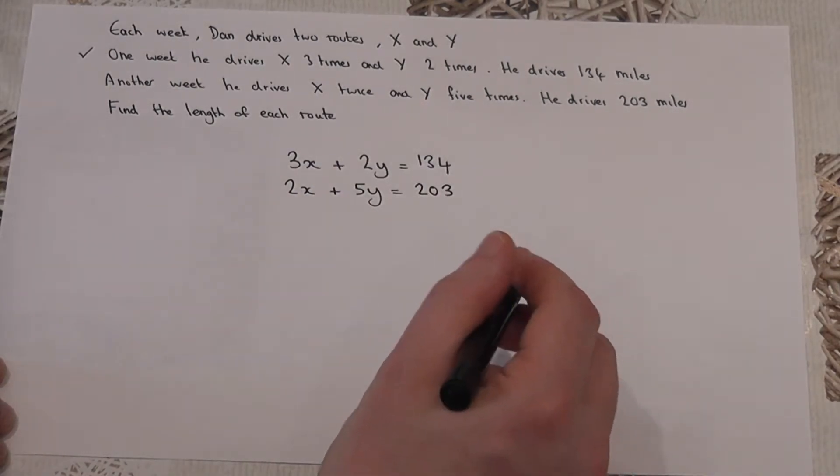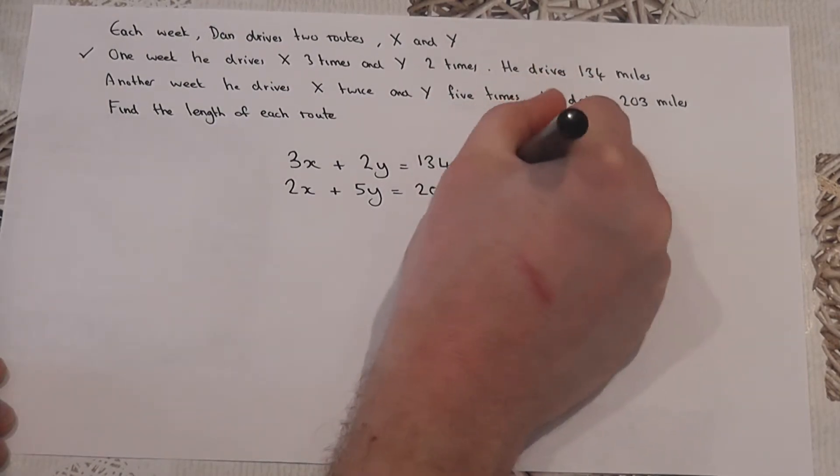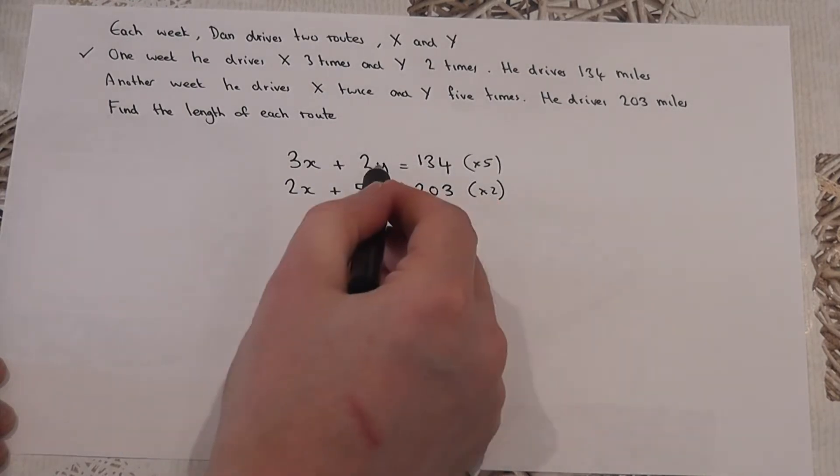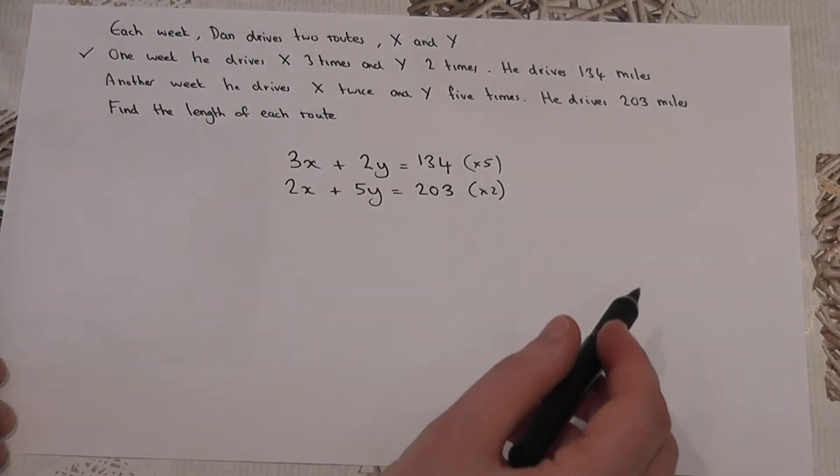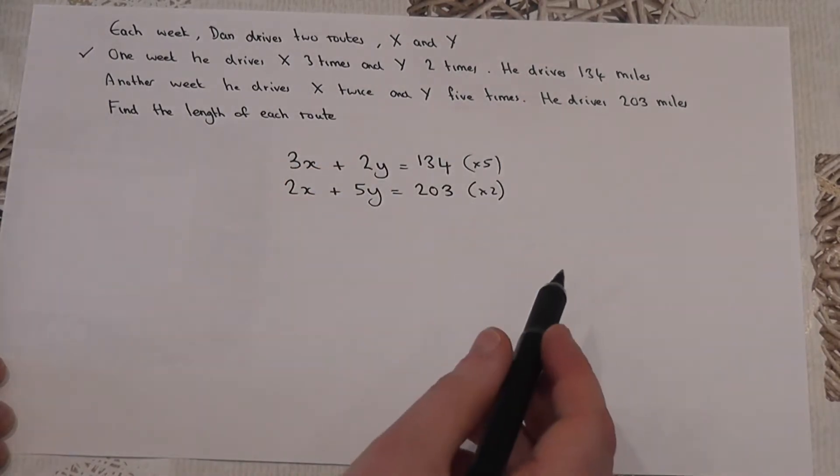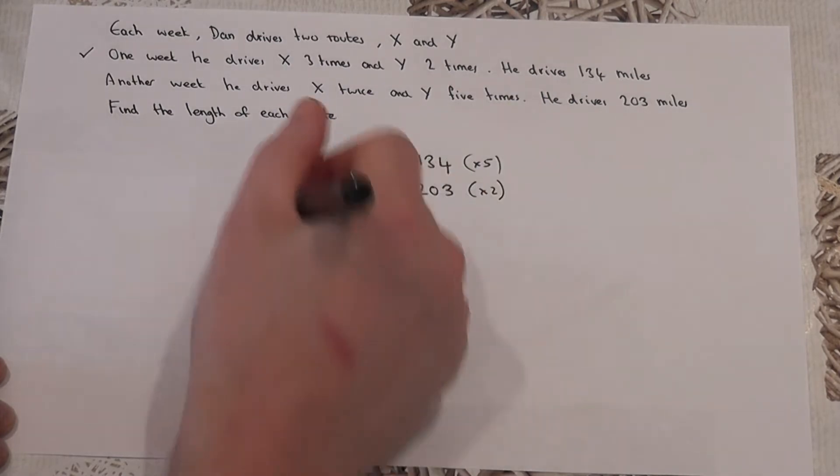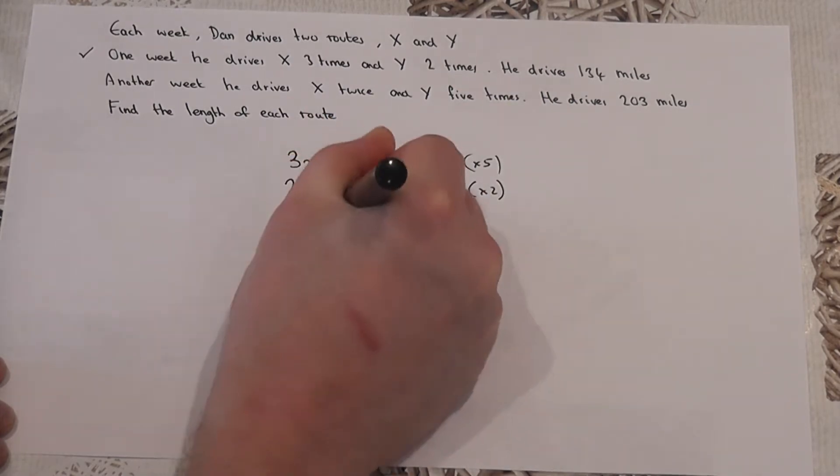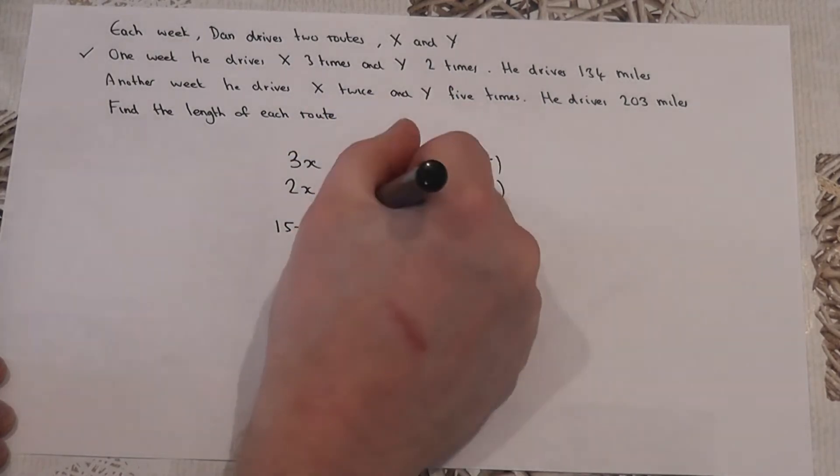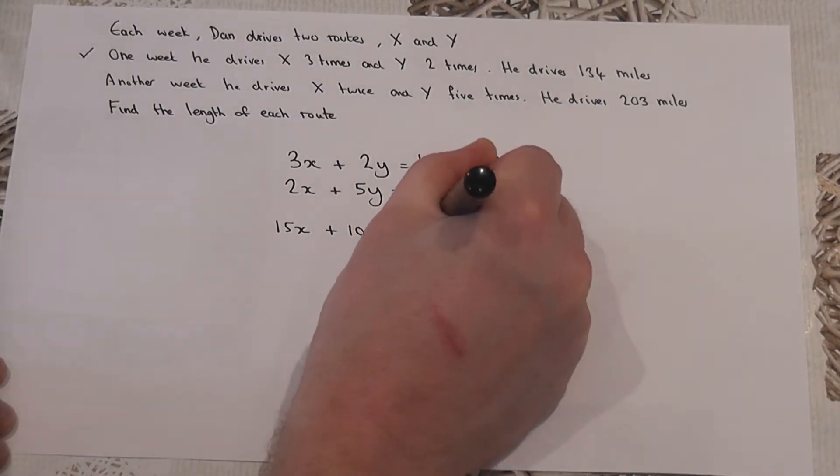If I were to times the top equation by five and the bottom equation by two, five times two is ten, two times five is ten. It makes the coefficient or the number of y's the same in both equations. However, I must multiply the entire equation, the top equation, by five. So, five times three x is 15x. Five times two is ten. And five lots of 134 is 670.